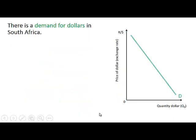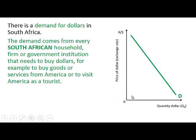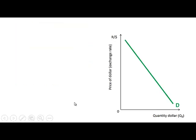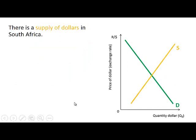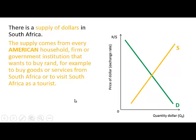There is a demand for dollars in South Africa, and this demand comes from every South African household, firm, or government institution that wants to buy goods and services from America or to visit America as a tourist. There is also a supply of dollars in South Africa, and this supply will come from every American household, firm, or government institution that wishes to buy Rand — for example to buy goods and services from South Africa or to visit South Africa as a tourist.